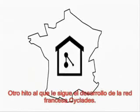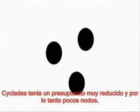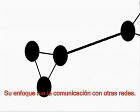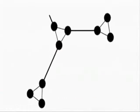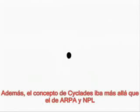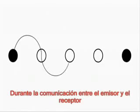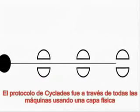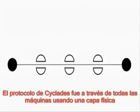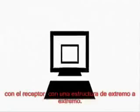Another milestone followed with the development of the French network Cyclades. Since Cyclades had a far smaller budget than ARPANET, and thus also fewer nodes, the focus was laid on the communication with other networks. In this way, the term Internet was born. Moreover, Cyclades' concept went further than ARPANET's and the NPL's. During communication between sender and receiver, the computers were not to intervene anymore, but simply serve as a transfer node. Cyclades' protocol went through all machines using a physical layer that was implemented into the hardware, providing a direct connection with the receiver and an end-to-end structure.